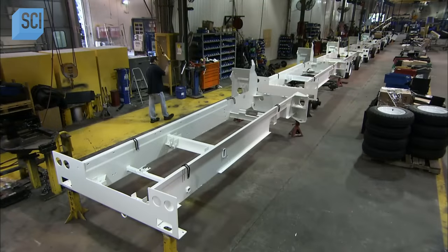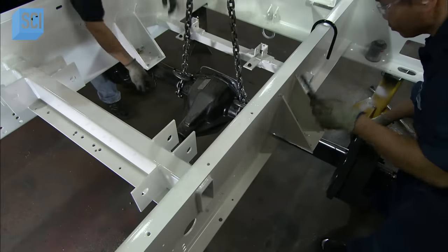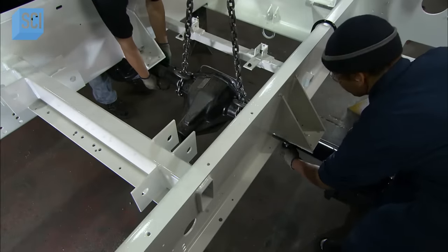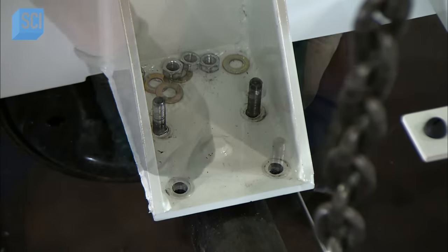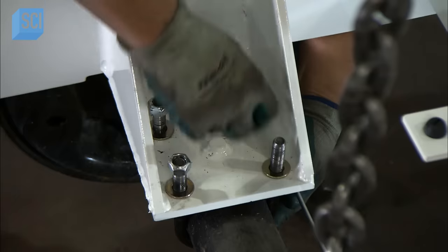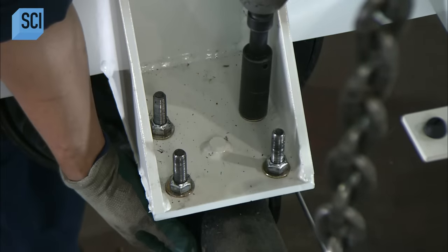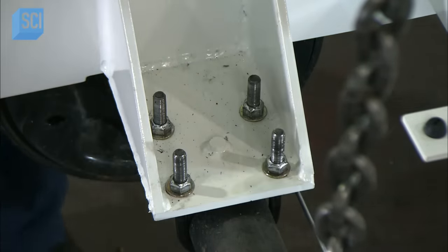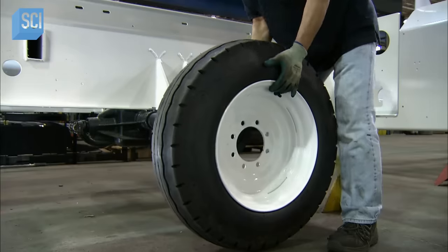Elsewhere in the factory, technicians install components on the vehicle chassis. First, the front and rear axles. Then, on each axle, two wheels, with tires specifically designed for long life on the airport tarmac.